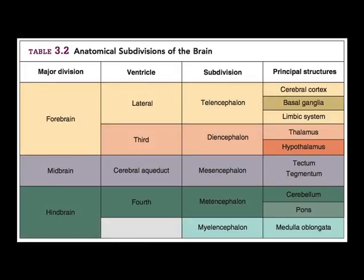The central nervous system has several major divisions. Starting as a tube with forebrain, midbrain, and hindbrain, the forebrain is further divided into the telencephalon and diencephalon, and the hindbrain into the metencephalon and myelencephalon. The cortex, basal ganglia, and limbic system are all part of the telencephalon within the forebrain, while the thalamus and hypothalamus are part of the diencephalon.